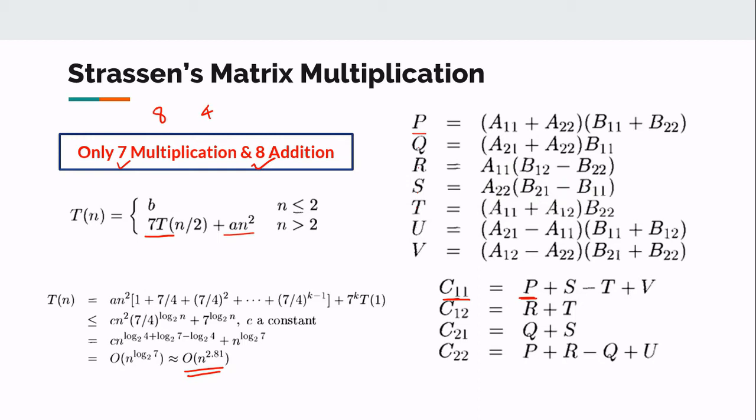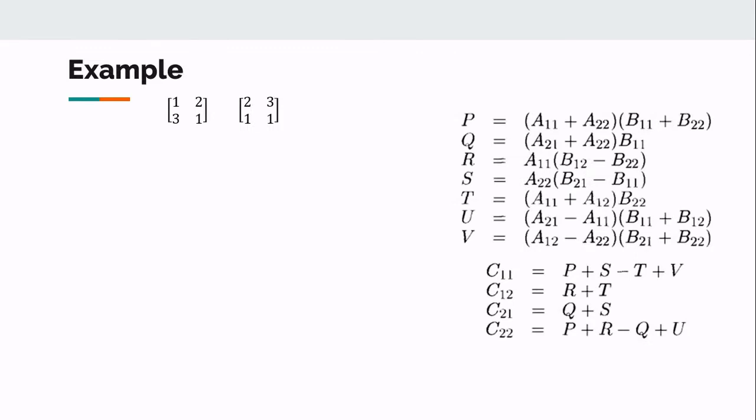Let us see an example. Here I am just multiplying two by two matrices. With Strassen's algorithm, you can multiply four by four also. Maybe you do divide and conquer. Then you multiply with Strassen's matrix multiplication. That will be better if you are having a four by four matrix.